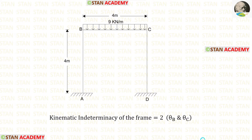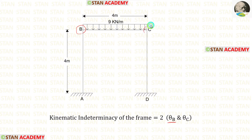Now let us find the kinematic indeterminacy of the frame. We know that this is a non-sway type frame. In this frame, at joint B we have the slope theta B, and at joint C we have the slope theta C. So the kinematic indeterminacy of the frame is two, and we have to make two equilibrium equations.